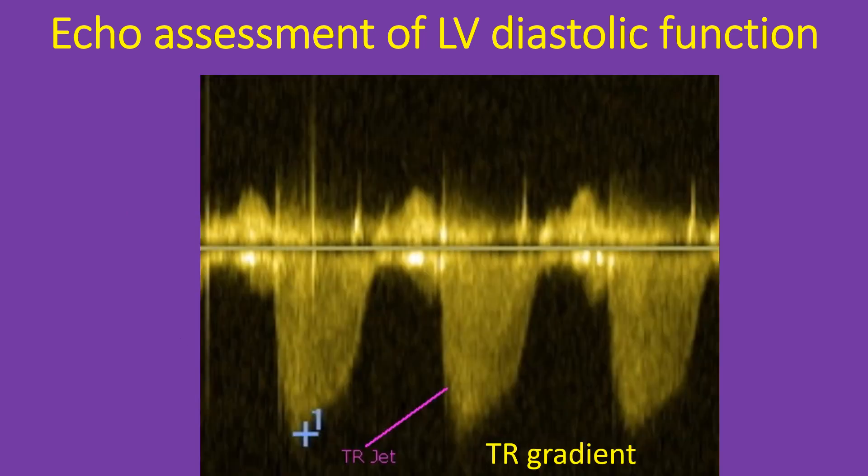Tricuspid regurgitation jet velocity and pulmonary regurgitation end-diastolic velocity indicating pulmonary hypertension are also taken as surrogates of left atrial pressure in the absence of pulmonary disease.